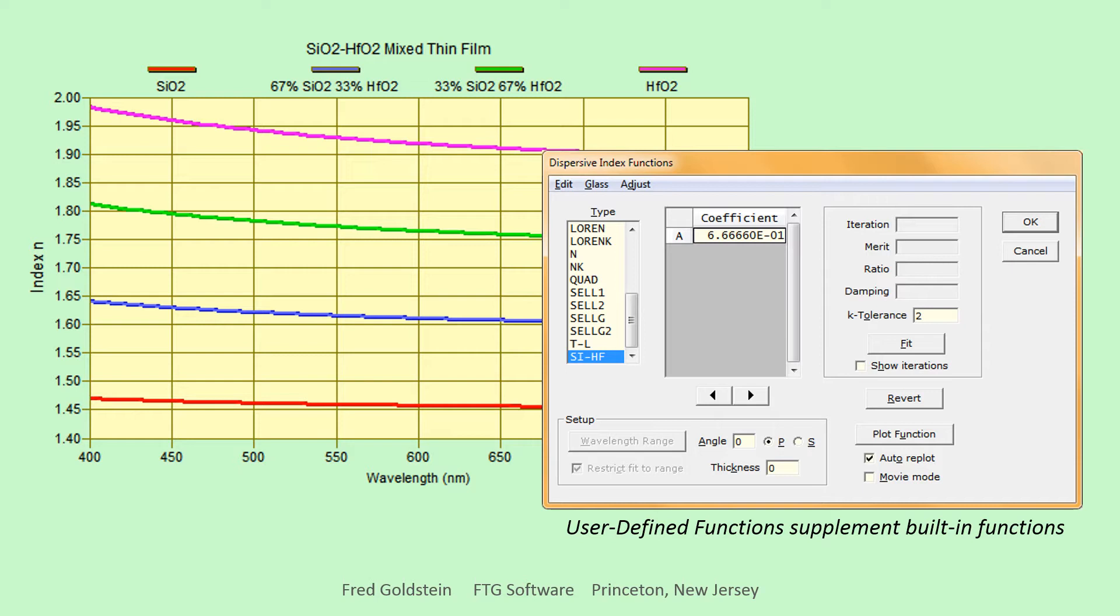Our SiHF mixed film is plotted in the dispersive index functions dialog, which enables us to select both built-in and user-defined functions. A equals 0 corresponds to 100% SiO2 and A equals 1 to 100% HfO2. Note, this function is given only for illustrative purposes. We are not implying any accuracy.